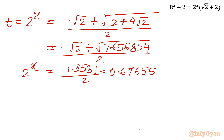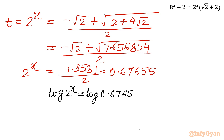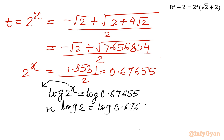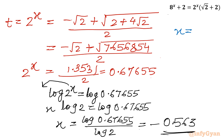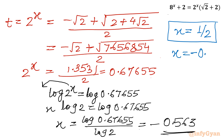Now 2^x = 0.6765. Taking log of both sides: x · log 2 = log(0.6765). Dividing both sides by log 2: x = log(0.6765) / log 2 ≈ -0.563. So we have two real solutions: x = 1/2 (or 0.5) and x ≈ -0.563.